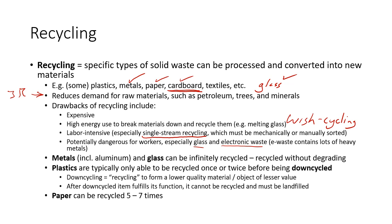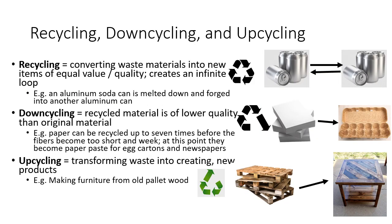Metals and glass can be infinitely recycled — you can melt down an aluminum can and make it into another aluminum can over and over again, essentially infinitely. Most plastics, if they can be recycled at all, typically can only be recycled once or twice. You can't take a PET water bottle and recycle it again and again like you can with a glass bottle. After one or two cycles, they're typically down-cycled. Paper can typically be recycled five to seven times before it is down-cycled and can't be recycled again.